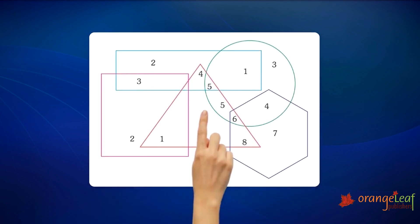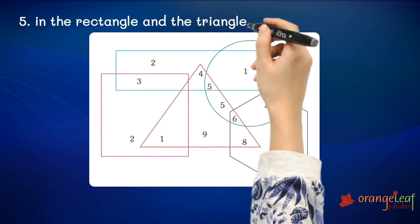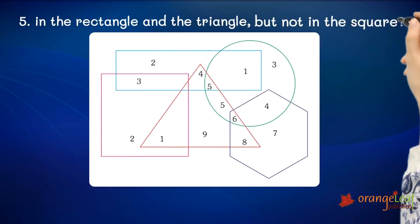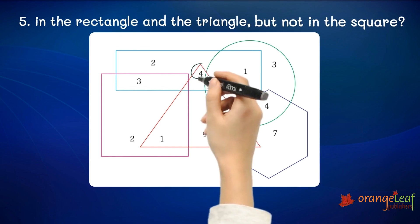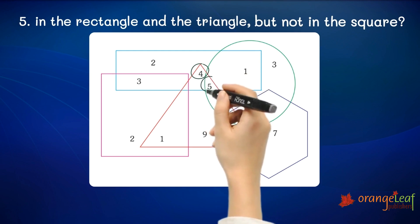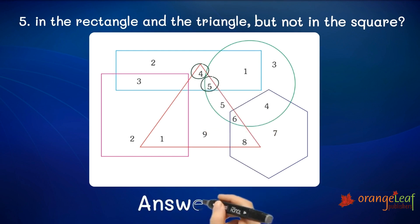Can you tell me the sum of the numbers present in the rectangle and the triangle but not in the square? We have two numbers that are present in both the rectangle and the triangle but not in the square: four and five. So the sum of these two numbers is nine.